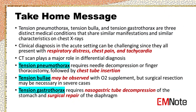Take-home message: Tension pneumothorax, tension bulla, and tension gastrothorax are three distinct medical conditions that share similar manifestations and characteristics on chest x-rays. Clinical diagnosis in the acute setting can be challenging since they all present with respiratory distress, chest pain, and tachycardia. CT scan plays a major role in differential diagnosis. Tension pneumothorax requires needle decompression or finger thoracostomy followed by chest tube insertion. Tension bullae may be observed with oxygen supplementation, but surgical resection may be necessary in severe cases. Tension gastrothorax requires nasogastric tube decompression and surgical repair of the diaphragm.